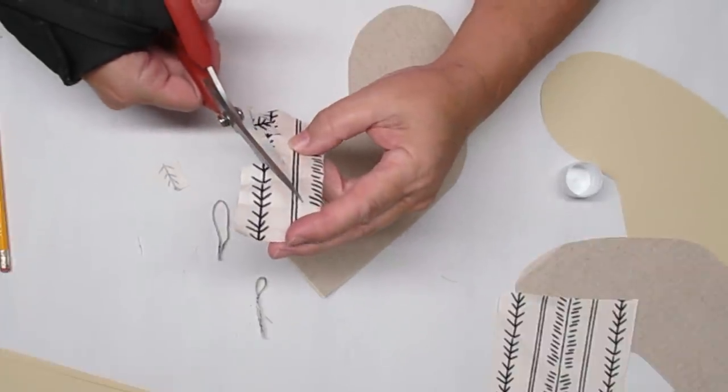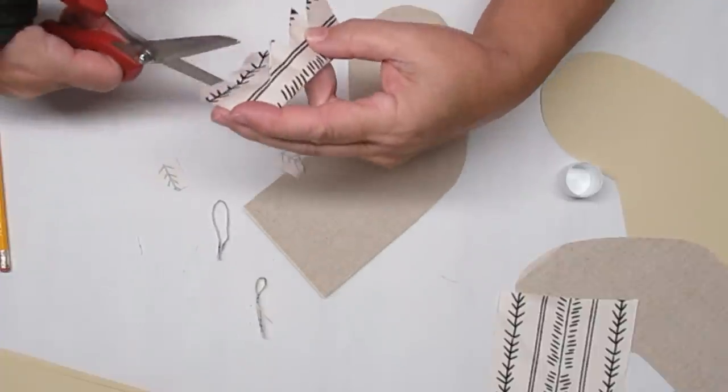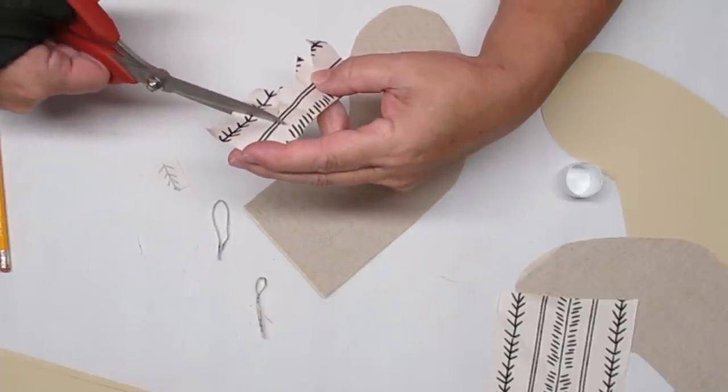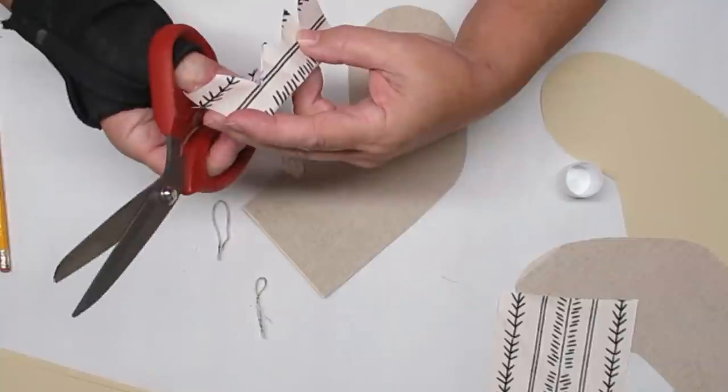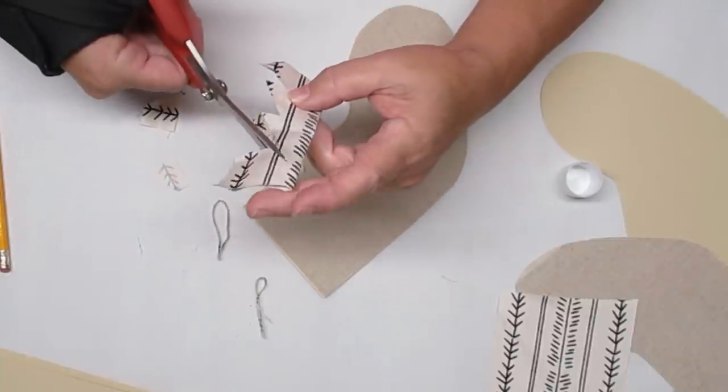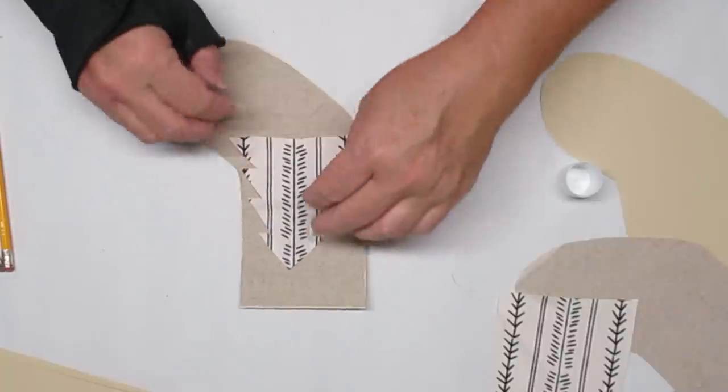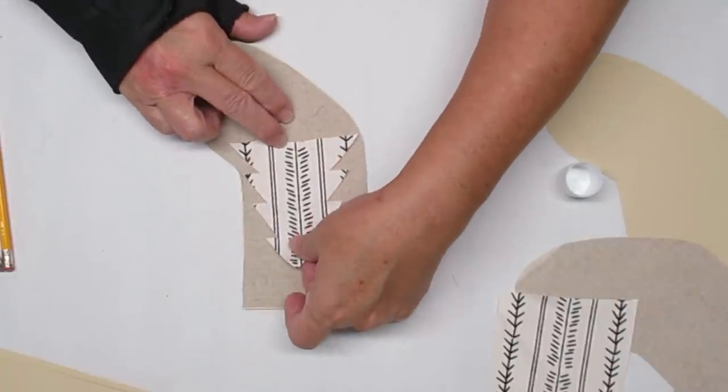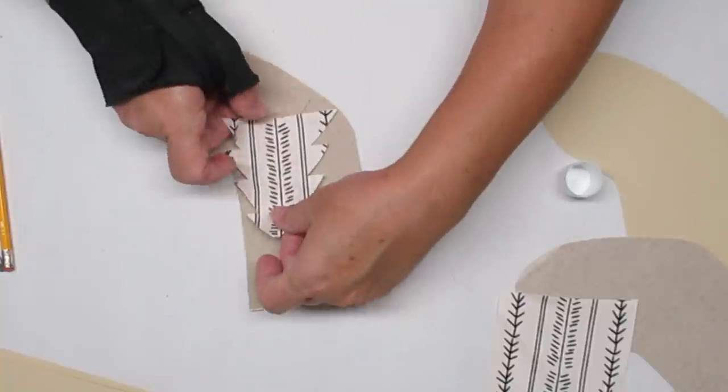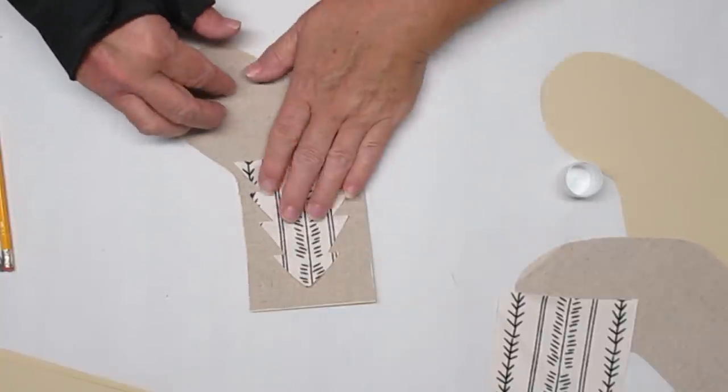And each time I go and cut up on an angle towards the top, I'm going in just a little bit further from the edge each time. Basically, I'm just making my own Christmas tree. If you can't do it freehand like this, that's okay. Go ahead and cut out a Christmas tree on some paper, trace it on your fabric and cut it out that way.